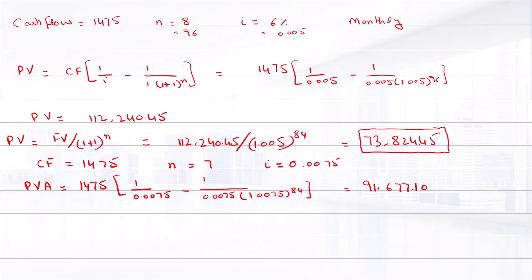The total present value is the sum of these two amounts: $73,824.45 plus $91,677.10 equals $165,501.55. This is the value today if we purchase this annuity for 15 years.